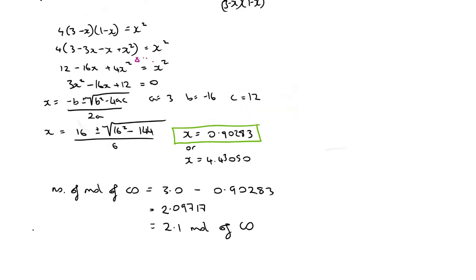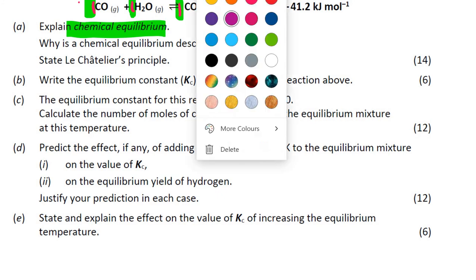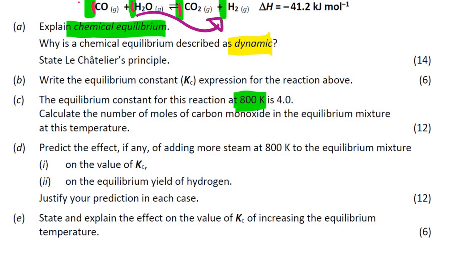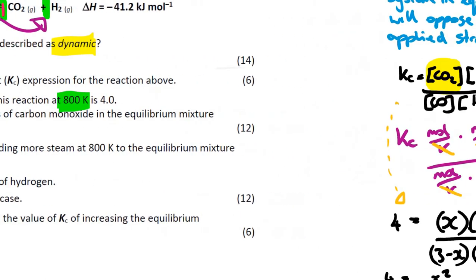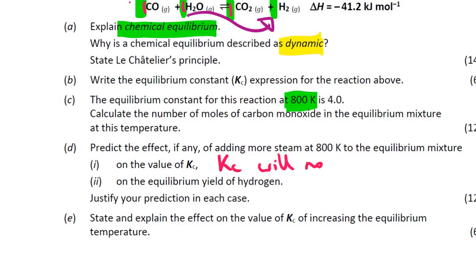Predict the effect, if any, of adding more steam on the value of Kc. Kc stays the same — it only changes with temperature. Adding more steam will force the equilibrium in the forward direction, favouring the forward reaction and making more CO₂ and H₂. The equilibrium position moves to keep Kc constant. Therefore the equilibrium yield of hydrogen will increase, because the system opposes the change and favours the forward reaction.